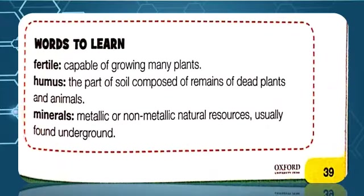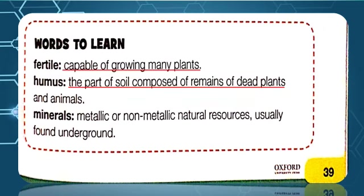Our next topic is Words to Learn. These words are here to develop student science vocabulary. The first word is fertile. Fertile means capable of growing many plants — students, underline this line. The second word is humus: the part of soil composed of remains of dead plants and animals — underline this line. The third word is minerals: metallic or non-metallic natural resources usually found underground — underline this line.